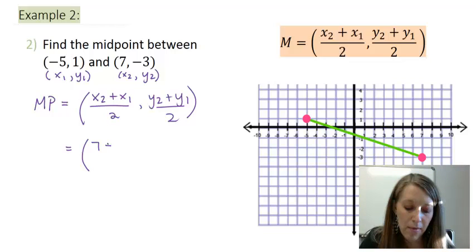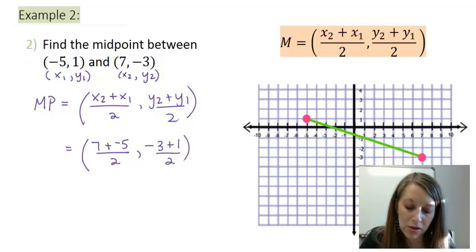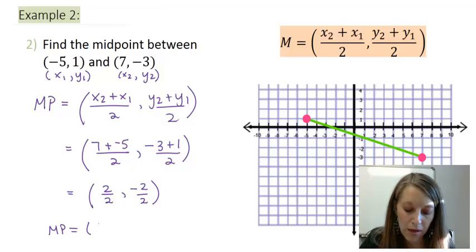So I add my x values up, divide by 2. I add my y values up, divide by 2, and simplify. So I have 2 divided by 2 in my x coordinate, negative 2 divided by 2 in my y coordinate. So that means my most simplified midpoint here is 1, negative 1.